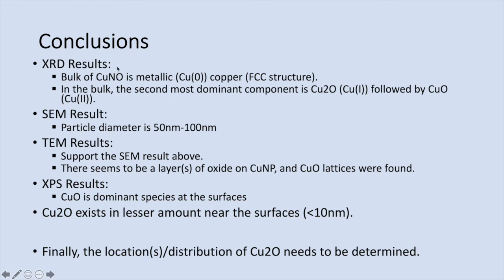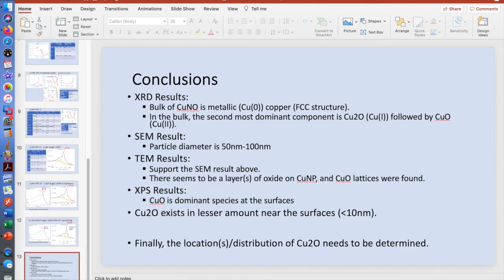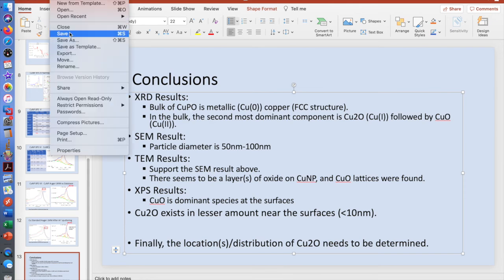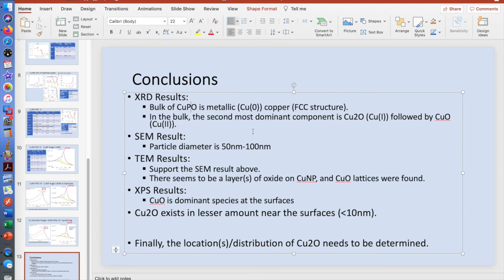So, my conclusion: XRD results show an FCC structure where Cu2O is the more dominant impurity and CuO is the third component. SEM tells us the particle size is about 50 to 100 nanometers and the surface is not smooth. XPS tells us that CuO is the dominant species at the surface at roughly a 2:1 ratio, while Cu2O exists in lesser amounts near the surface — which is somewhat contradictory to XRD. But XRD probes a much deeper, more bulk structure.